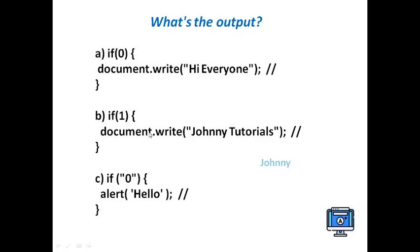Next one, let us check into the b block, that is b bit. If of 1, always remember the value of 1 is boolean, that is true. So it will be executed. The output will be Johnny Tutorials.